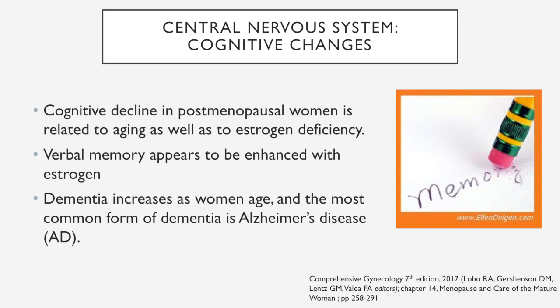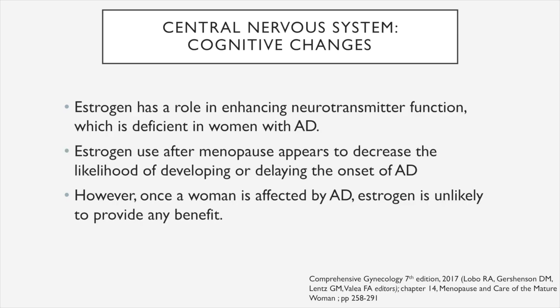Cognitive decline in postmenopausal women is related to aging as well as to estrogen deficiency. Verbal memory appears to be enhanced with estrogen. Dementia increases as women age, and the most common form is Alzheimer's disease. Estrogen has a role in enhancing neurotransmitter function, which is primarily deficient in women with Alzheimer's disease. Estrogen used after menopause appears to decrease the likelihood of developing or delay the onset of Alzheimer's disease. However, once a woman is already affected by Alzheimer's disease, estrogen treatment is unlikely to provide any benefit.